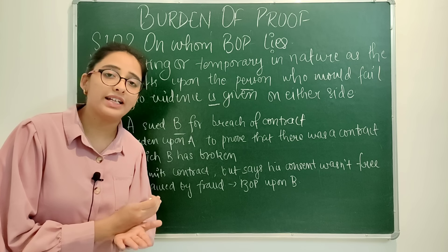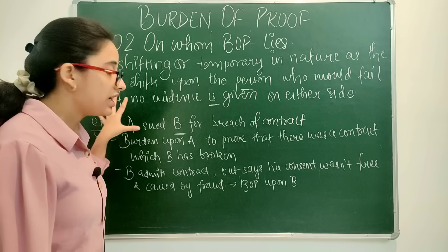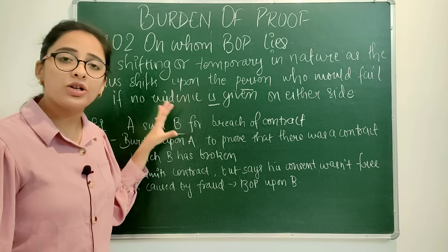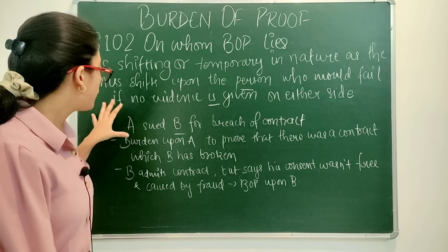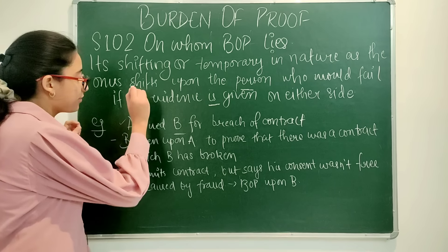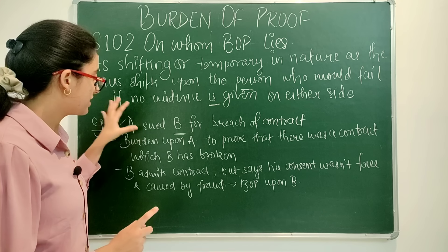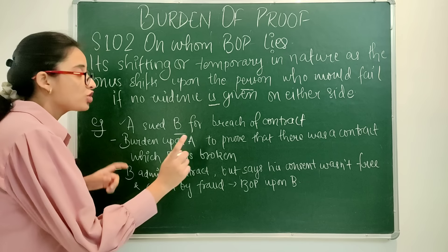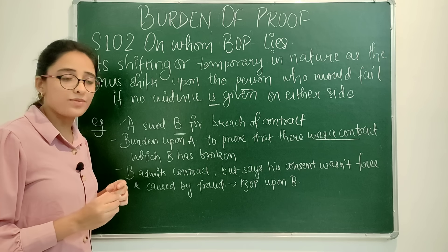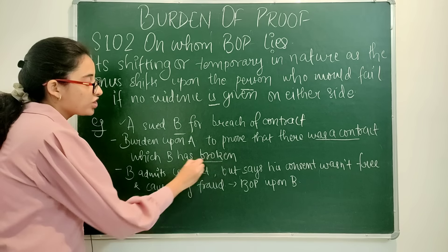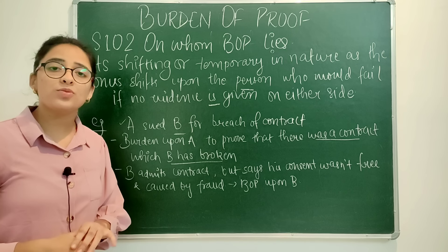A's turn of giving evidence comes first. A has to prove two things — first, that there was a contract between A and B; second, that B has broken the contract. If A proves both these things, then after proving both things, we will see at this point on whom the onus lies.